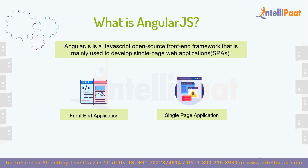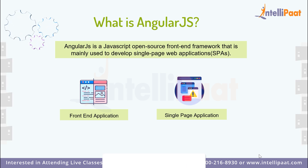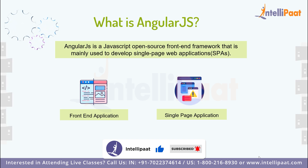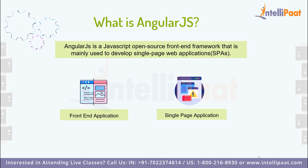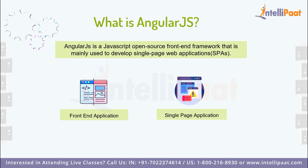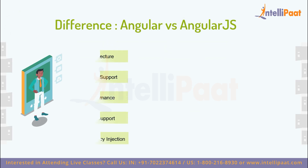AngularJS is an open source project which can be freely used and changed by anyone. It extends HTML attributes with directives, and data is bound with HTML, bringing two-way data binding. This lets us see data changes in JavaScript automatically shown on the UI. AngularJS has directives that let us create more separated and reusable code, and generally it allows programmers to write applications using the Model View Controller pattern.